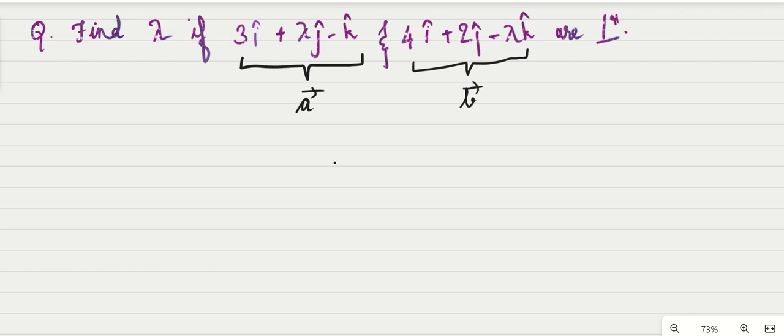If two vectors are perpendicular, we know that their dot product will be equal to 0. So we can write: since vector A and vector B are perpendicular, A vector dot B vector is equal to 0. Their dot product is 0.